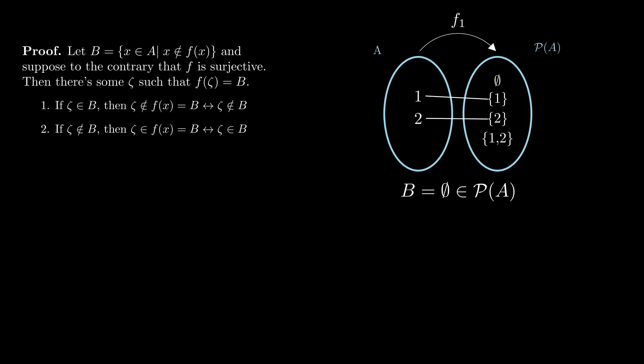zeta is not in its own image through F, but its image is B. And for this case, we've just assumed that it is an element of B. Thus, we get a contradiction.